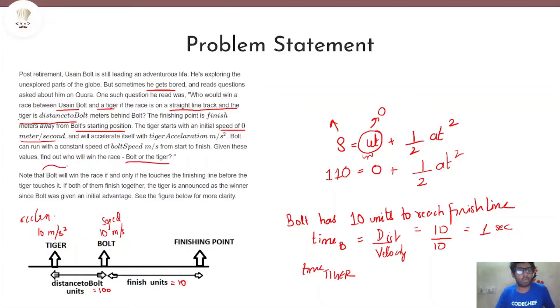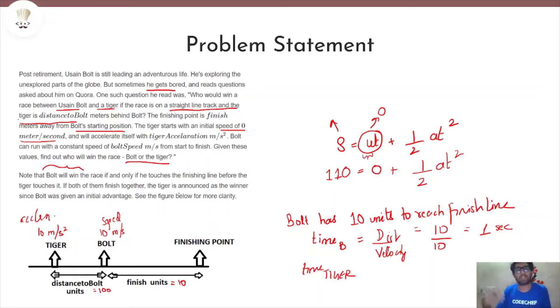Bolt will win the race only if he touches the finish line strictly before the Tiger touches it. If both finish together, the Tiger is the winner because Bolt was given a head start.